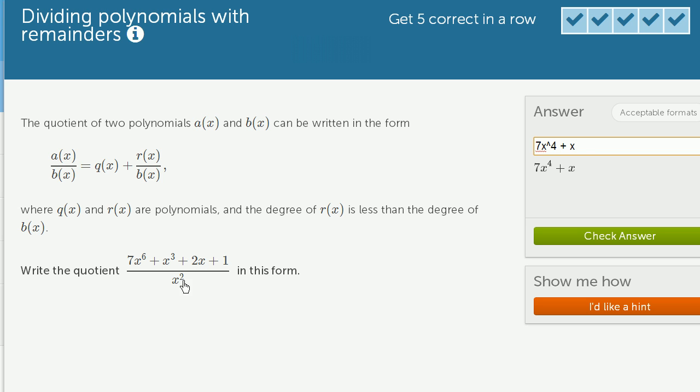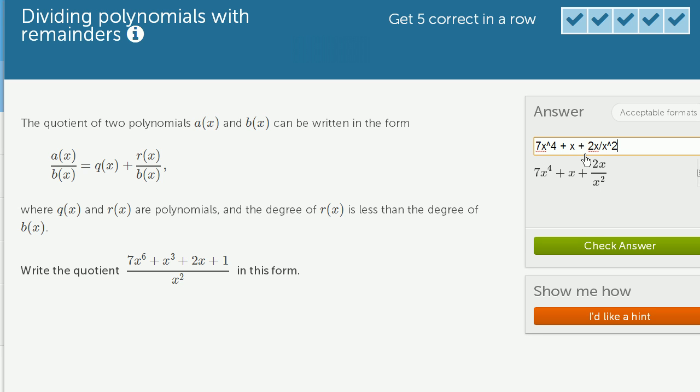Here, this is a degree one. This is degree two. So you could write it as plus 2x over x squared, like that.